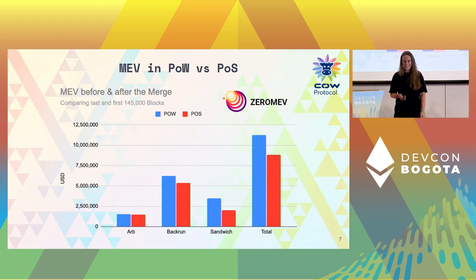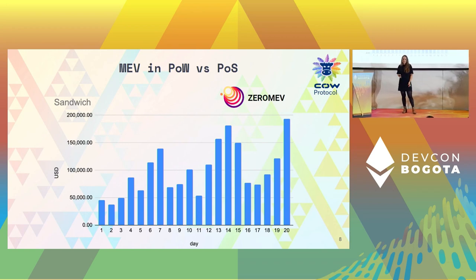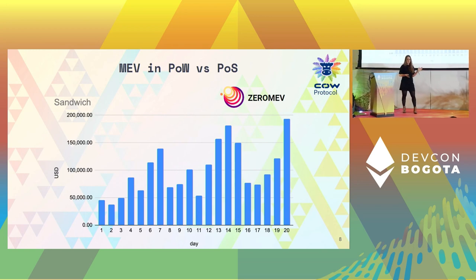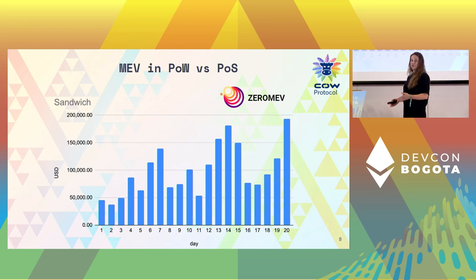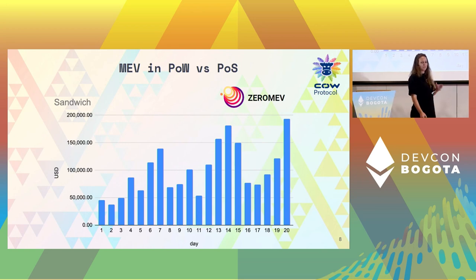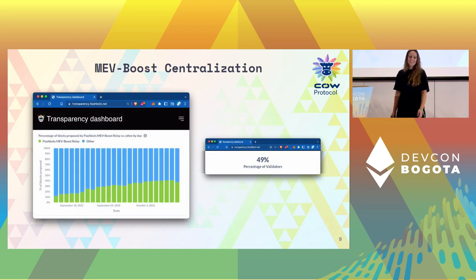But what's the conclusion? If we zoom into one specific kind of MEV — sandwich attacks — and look at the first 20 days of sandwich attacks on proof-of-stake, we can see that the amount of value extracted from these attacks is growing. At the beginning when we moved from proof-of-work to proof-of-stake there was a short period of lower MEV extraction, but over time we are getting back to the same levels as before.